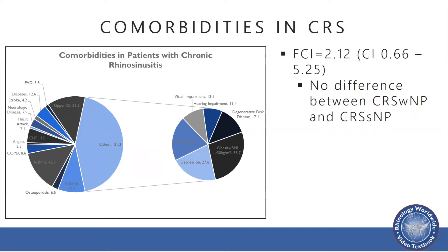When they further examined whether comorbidities differed between phenotypes of CRS — those with and without nasal polyps — they found no significant difference. Although they did note a significant amount of comorbidities, among the highest being asthma, depression, obesity, and hearing impairment.